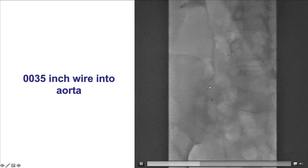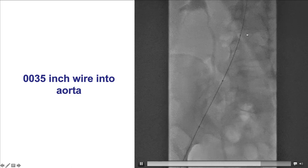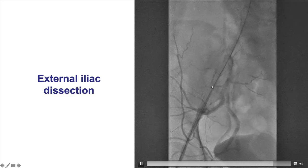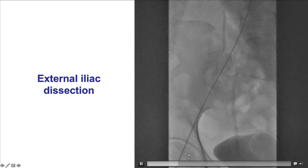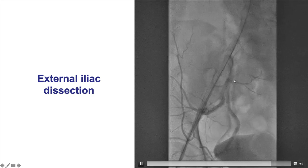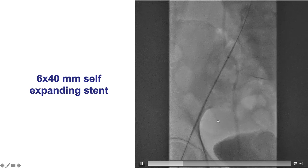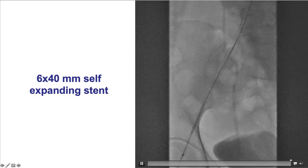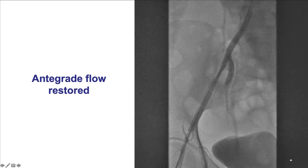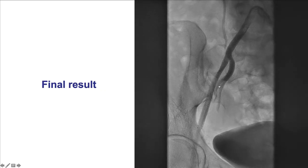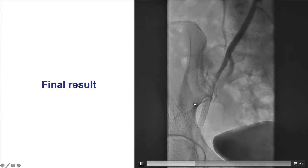As a result, the microcatheter was advanced over the antegrade wire and used to advance a 0.035 wire into the aorta. Repeat injection confirmed the problem was located in the external iliac artery — if the dissection extended into the femoral, surgical repair would have been required. But here, the problem was localized in the external iliac, which is amenable to stenting. Therefore, a 6x14 mm self-expanding stent was deployed into the right external iliac artery, post-dilated with a 6x0 mm balloon, restoring antegrade flow with a nice final result.